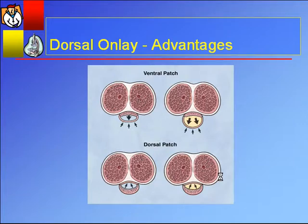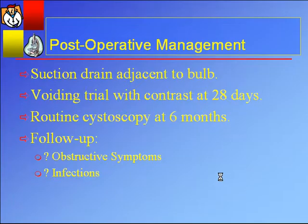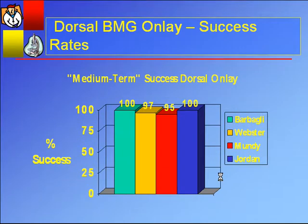The advantages of the dorsal onlay: the ventral patch graft has outward pressures with no support or backing, creating a real risk of sacculation long-term. Dorsally it's buttressed by the corporal bodies — less incidence of sacculation and better spread fixation of the graft. Post-operatively, I put a suction drain adjacent to the bulb, avoid trial of contrast for about 28 days, routine cystoscopy at six months — probably the best indicator of success. Uroflow is a good indicator too. Urethrography is not as accurate in looking at post-op patients. If they're open at six months, it's a good sign they'll be open indefinitely. After that, I follow up based on obstructive symptoms or other findings like infections.